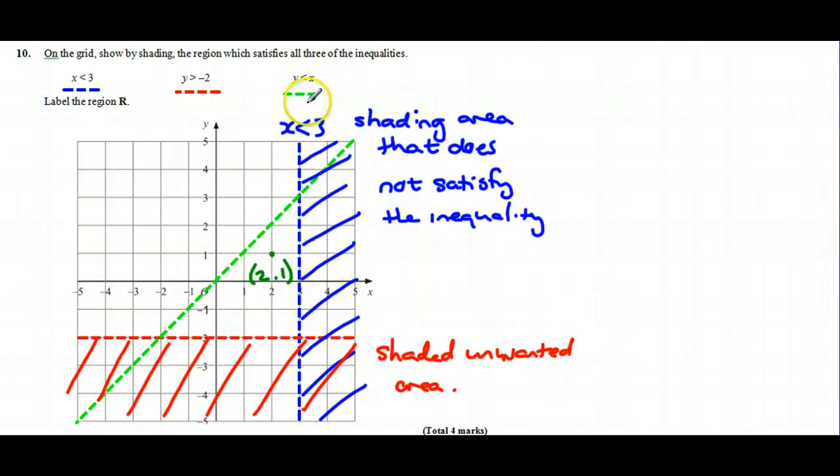So if x is 2 and y is 1, then that does satisfy our inequality, which means this is the region we want and this is the bit we do not want.